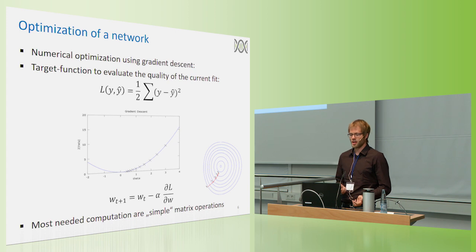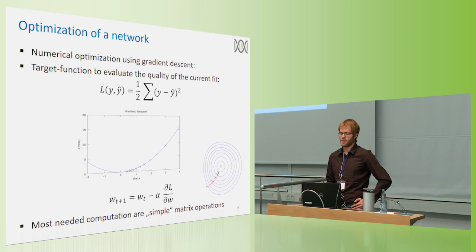Instead what we do is to optimize this network numerically. And the typical approach here is gradient descent. This means we have some target function, for example quadratic deviations, and fit each layer after each other by doing small changes to the parameters, and look in which direction our target function value is decreasing, and then do small changes in that direction till we end up with the model we like.